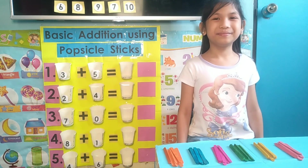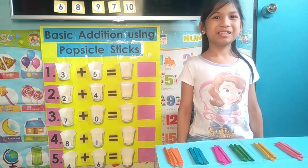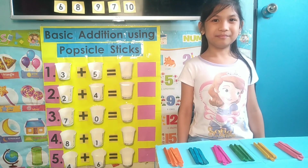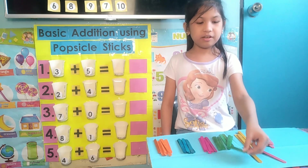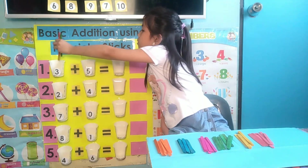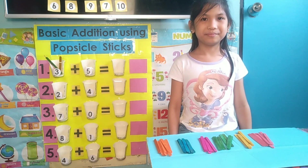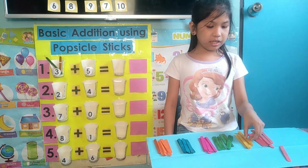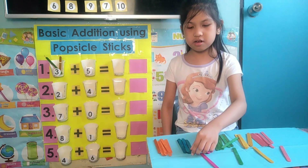Okay, Laleh, look at number one. What is the first number inside the first cup? Three! Okay, so count three popsicle sticks and put it inside the cup. One, two, three! Now, what is the second number inside the second cup? Five! Okay, you count five popsicle sticks and put it inside the cup. One, two, three, four, five!